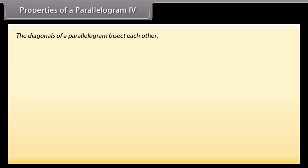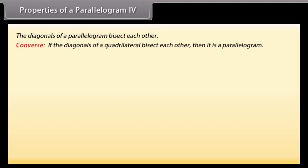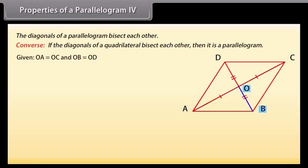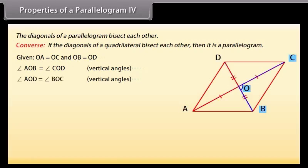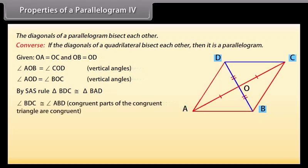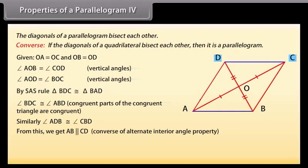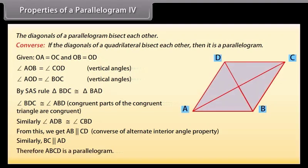Properties of a parallelogram 4: The converse of this theorem says that if the diagonals of a quadrilateral bisect each other, then it is a parallelogram. Given OA = OC and OB = OD: angle AOB = angle COD (vertical angles), similarly angle AOD = angle BOC. By SAS rule, triangle AOB is congruent to triangle COD. Therefore, angle BDC = angle ABD and angle ADB = angle CBD, giving AB parallel to CD and BC parallel to AD. Hence ABCD is a parallelogram.